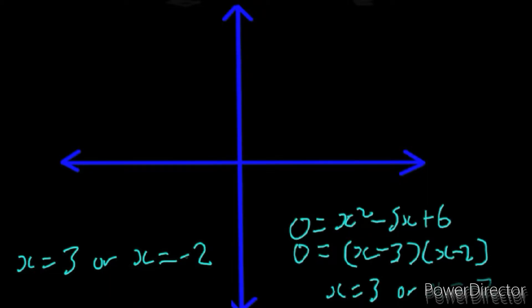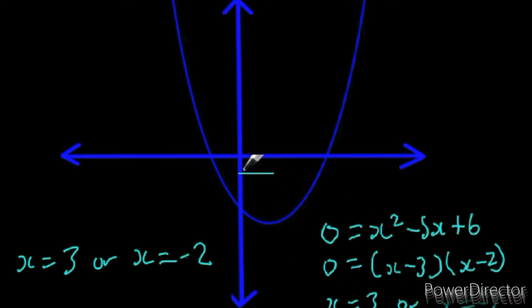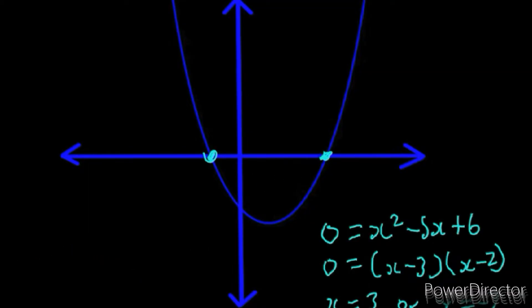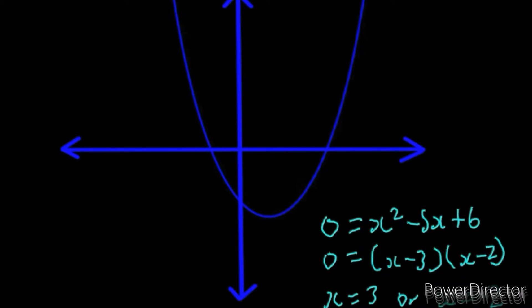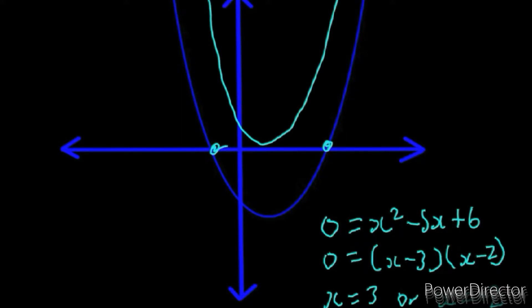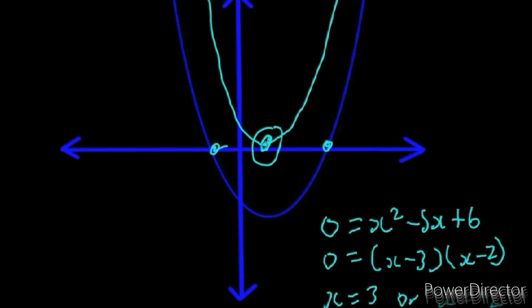This is how that graph looks — it has two roots: two unequal roots, one negative and one positive. Whenever your graph has unequal roots, it has two different x-intercepts. Whenever your graph has equal roots, there is only one x-intercept. Always remember: unequal roots means two different x-intercepts; equal roots means only one x-intercept.